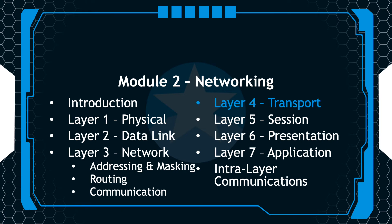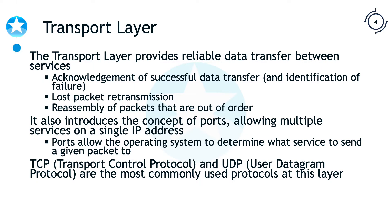As we discussed previously, there are seven layers in the OSI model. Currently, we are going to be discussing Layer 4, the transport layer. The transport layer is going to ensure that we have reliable communication between hosts and services. If there are missing packets, this layer and the protocols on this layer will retransmit those packets.